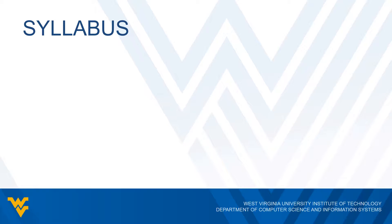The first thing you're going to want to do in this course is to read over the syllabus. I can't emphasize this enough. It's going to have all the important information that you need about the course. It's going to talk about the instructor, how to contact the instructor, such as with email or phone. It's going to go over the topics of this course and what the instructor expects out of you and what you can expect out of the instructor.